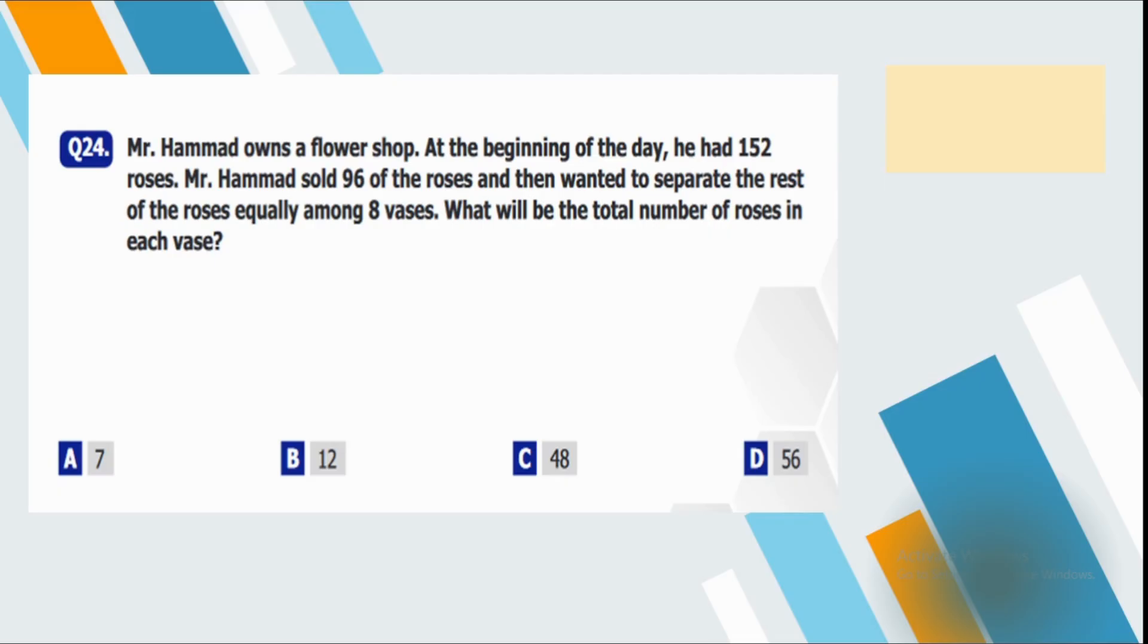Question number 24. Mr. Hamad owns a flower shop. At the beginning of the day, he had 152 roses. Mr. Hamad sold 96 of the roses and then wanting to separate the rest of the roses equally among eighth roses. What will be the total number of roses in each vase? So basically we will, first of all, we will subtract the number of roses that were sold. So 152 minus 96 is equal to 56. Now we have to arrange the rest of the roses into eight vases equally. So it means we are going to divide 56 on eight. So that is seven. So each vase will have seven roses in it. So A is our answer.